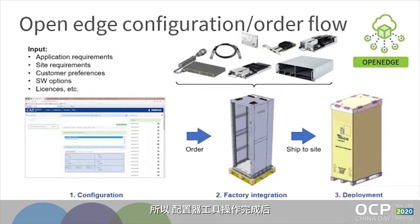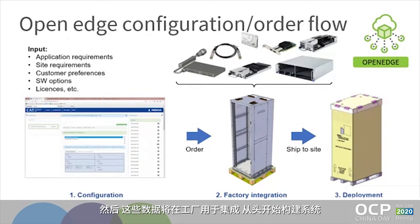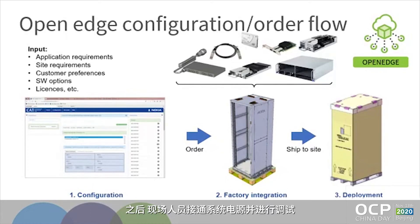Once the configurator tool is finished, it will output a file that contains detailed information on the configuration structure and also the bill of materials. This data is then used at the factory during integration, building the system from the ground up. Once the integration is finished and the system is fully tested, it is packaged and then shipped to the site. At the site, the task of the personnel is to power up the system and do the commissioning.